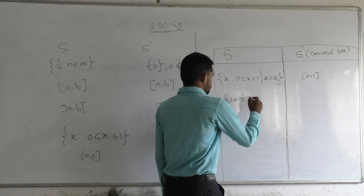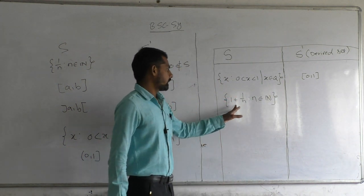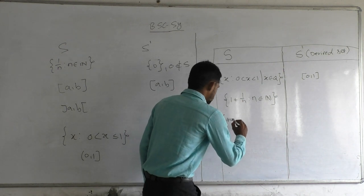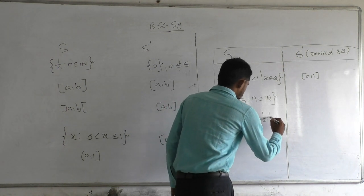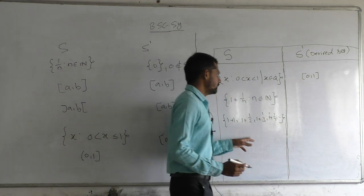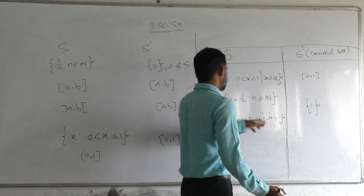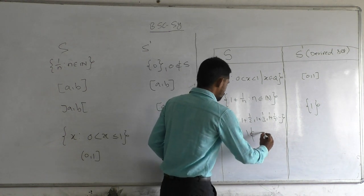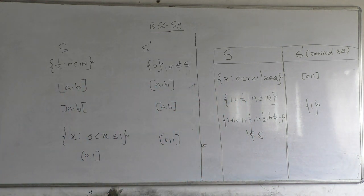Consider the set {1 + 1/n : n ∈ ℕ}. The elements are 1+1, 1+1/2, 1+1/3, 1+1/4, ... There is only one limit point of this set, which is 1. So the derived set of this set is the singleton {1}, and 1 does not belong to the set S. These are some examples of derived sets and limit points.